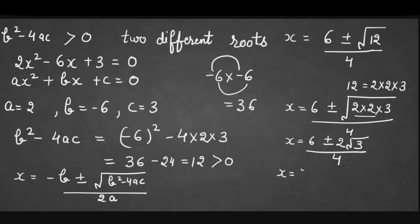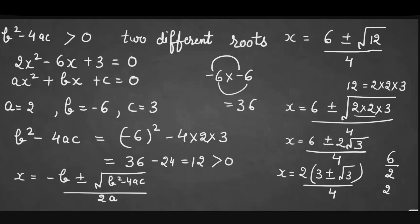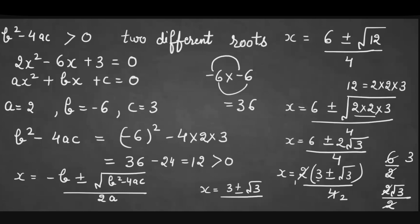We can take 2 as a common factor from the numerator: 2(3 ± √3) / 4. Simplifying, we get x = (3 ± √3) / 2. You can verify by dividing: 6 ÷ 2 = 3, and 2√3 ÷ 2 = √3. So the simplified result is x = (3 ± √3) / 2.